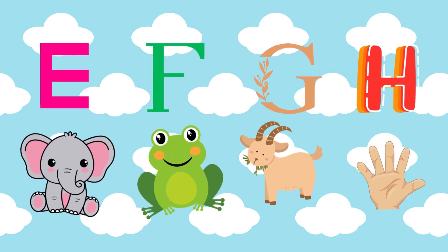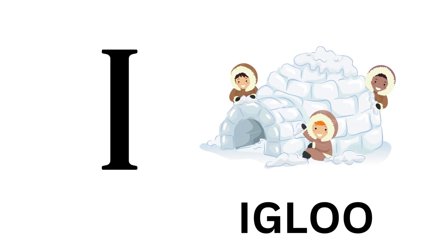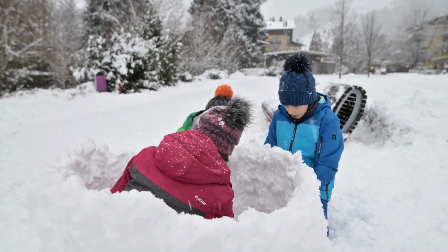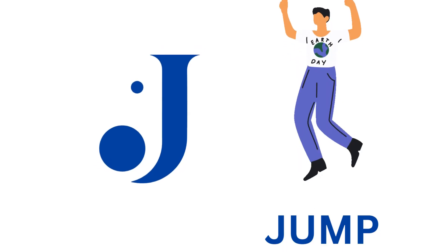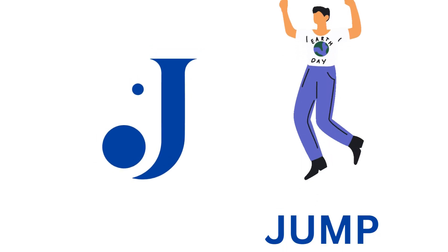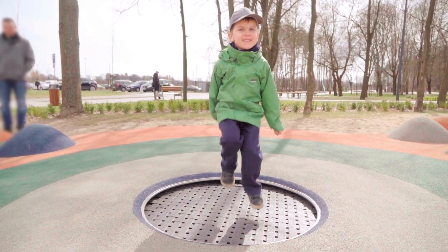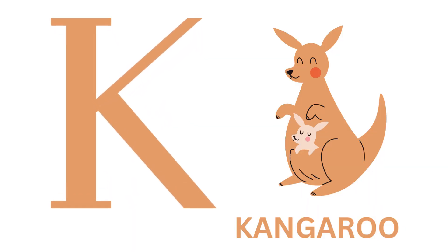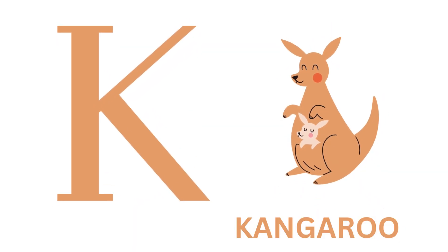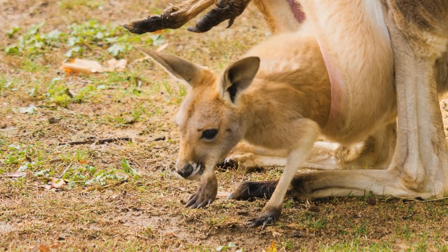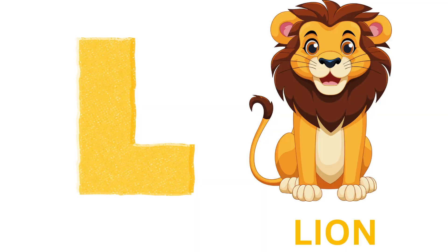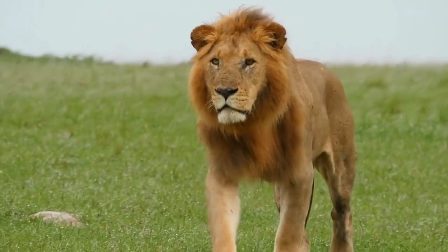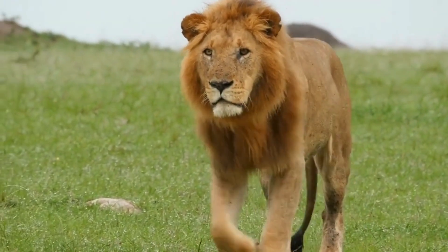I is for Igloo, I-I-Igloo. J is for Jump, J-J-Jump. K is for Kangaroo, K-K-Kangaroo. L is for Lion, L-L-Lion.